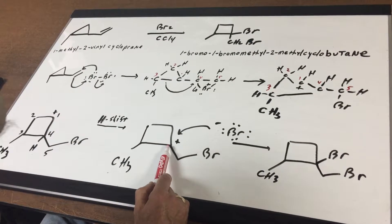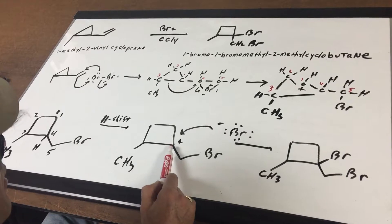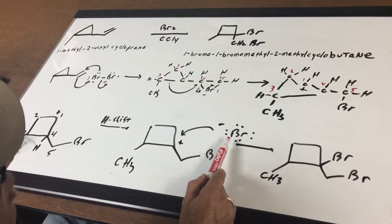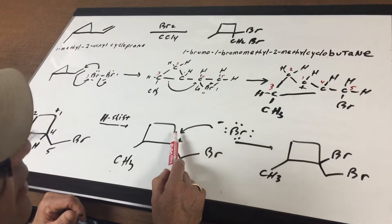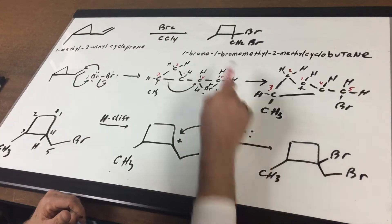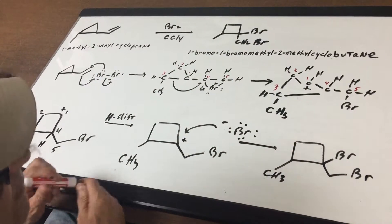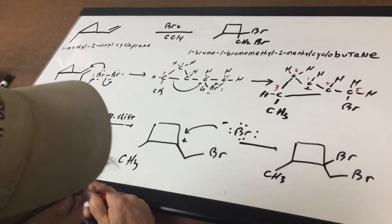And that'll put the plus charge here at number four. Now that it's a tertiary carbocation, we've improved the stability. The Br minus comes in, attacks, and finishes off the job to give me my desired product.